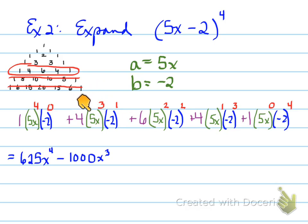So you have 4 times 5 to the 3. 5 to the 3 is 125. Multiplied by negative 2. Remember that it's negative 2 to the power of 1, so we have to include that. So the sign becomes negative. And it's 4 times 125 times 2. And that turns out to be 1,000x to the power of 3.